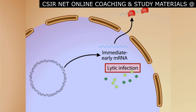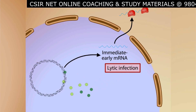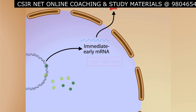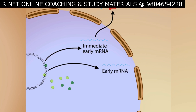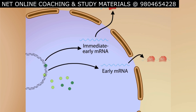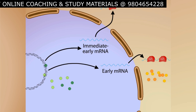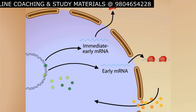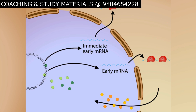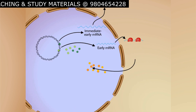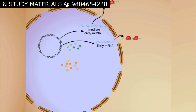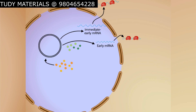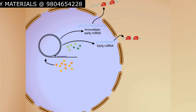Latent infection most commonly occurs in nerve cells. In the lytic infection, the translated proteins of the immediate early genes return to the nucleus, where they turn on the expression of another set of genes called the early genes. The mRNAs travel to the cytoplasm, where ribosomes translate them into proteins. These early proteins include a viral DNA polymerase.